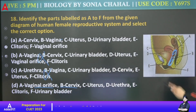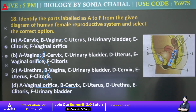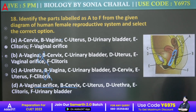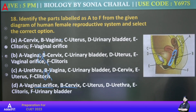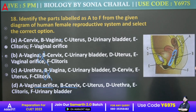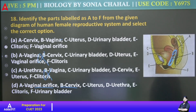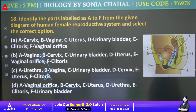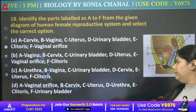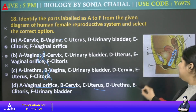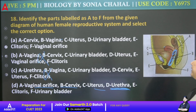D is urethra or urinary bladder. This will be our urinary bladder — D in one way. C is urethra — yes, C is urethra. D is urethra... no, D is urinary bladder. E is clitoris.